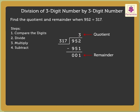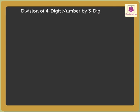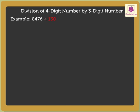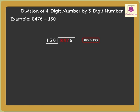Now, let us solve an example of division of a 4-digit number by a 3-digit number. Let us divide 8476 by 130. Firstly, we compare the first 3 digits from the left of the dividend with the divisor, as the divisor has 3 digits. Here, 847 is greater than 130, and therefore we can divide 847 by 130.